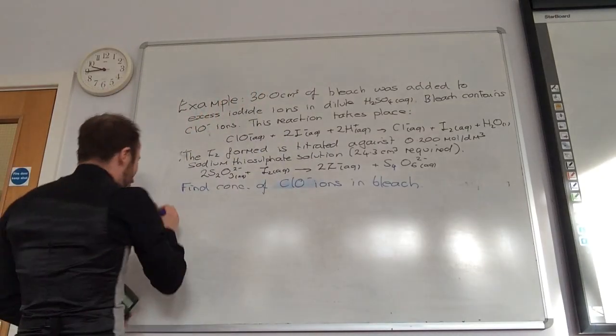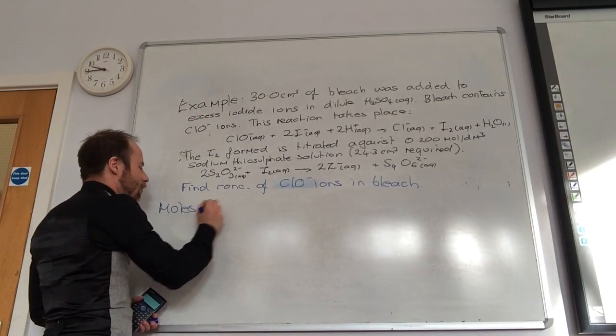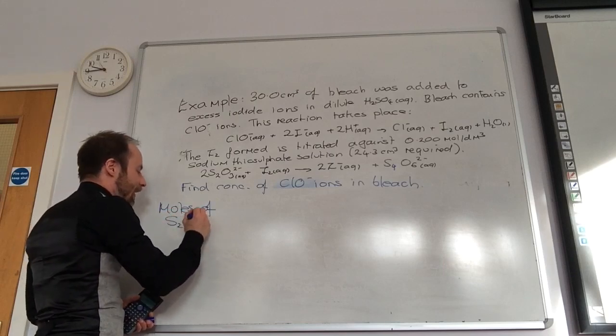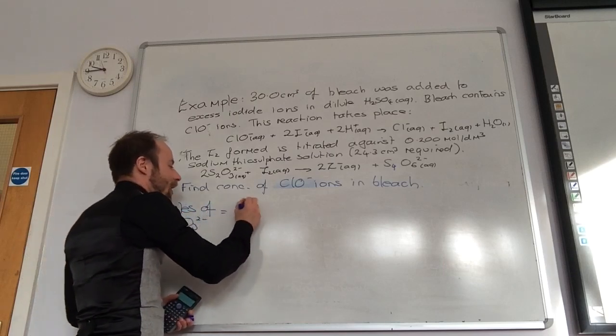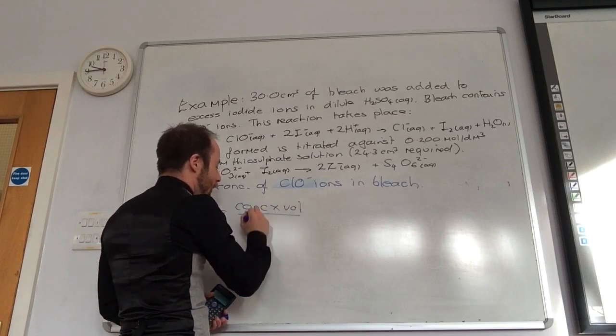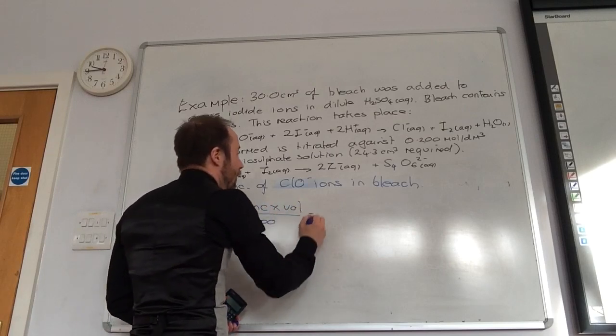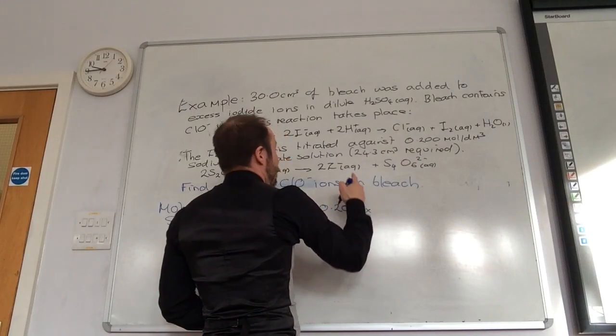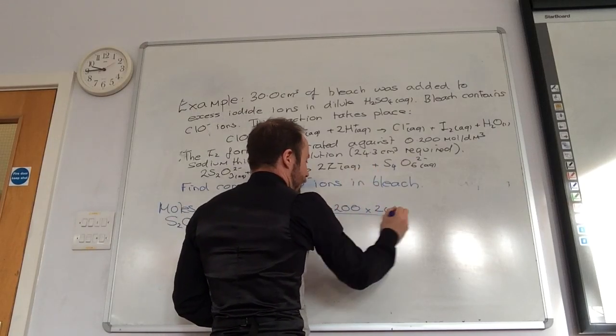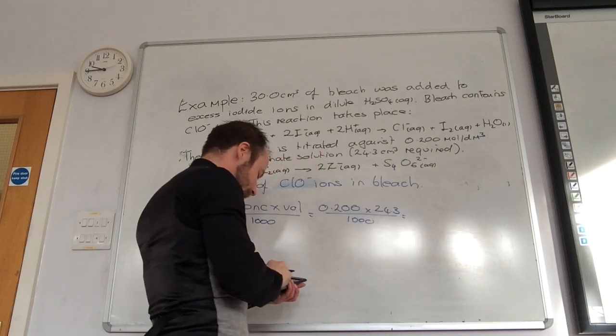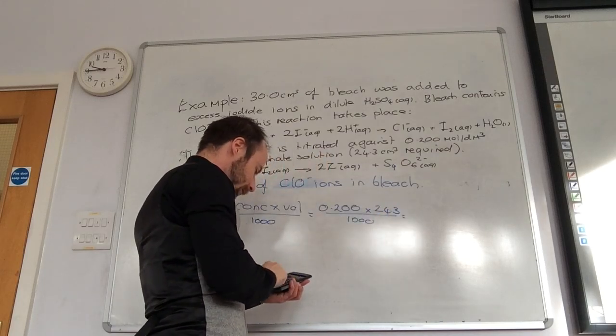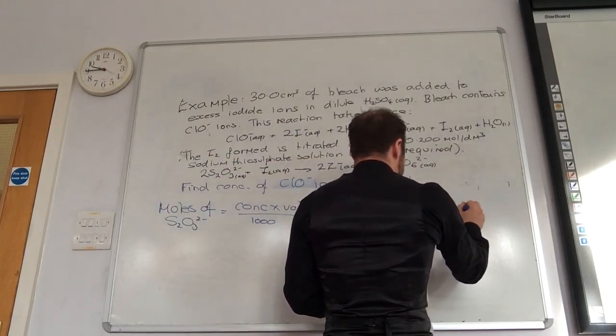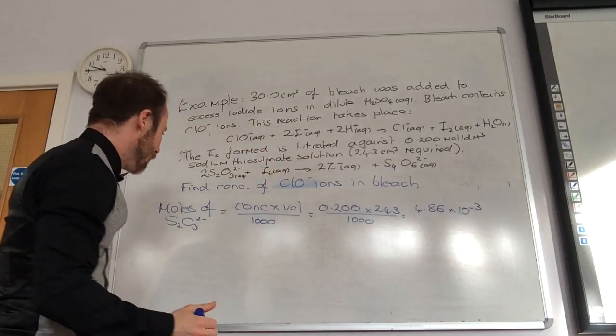By moles of thiosulfate. By moles. Great. So let's do moles of S2O3 2 minus. What we know is concentration times volume over 1,000. Concentration 0.200. The volume they told me was 24.3. And I'm going to pop that over 1,000. And I reckon that makes 4.86 times 10 to the minus 3 moles.